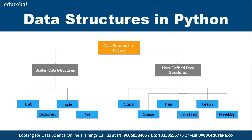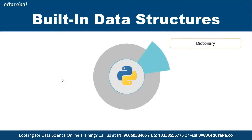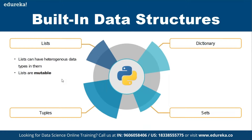Built-in data structures come with Python and they never change. In built-in data structures you have list, tuple, sets, and dictionary. A list can have heterogeneous data — that means it can have mixed data types such as integer, float, strings, boolean, or any data type. That's why it is called heterogeneous. Lists are mutable, which means once they are created you are allowed to modify them, and even after modifying them the address won't change.